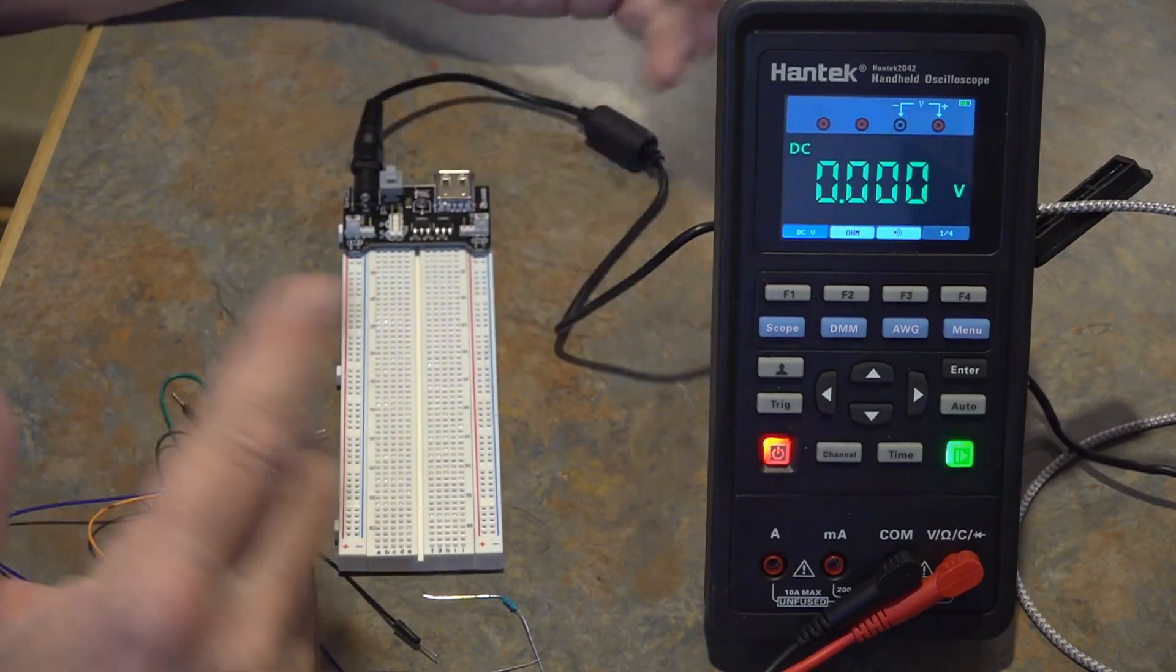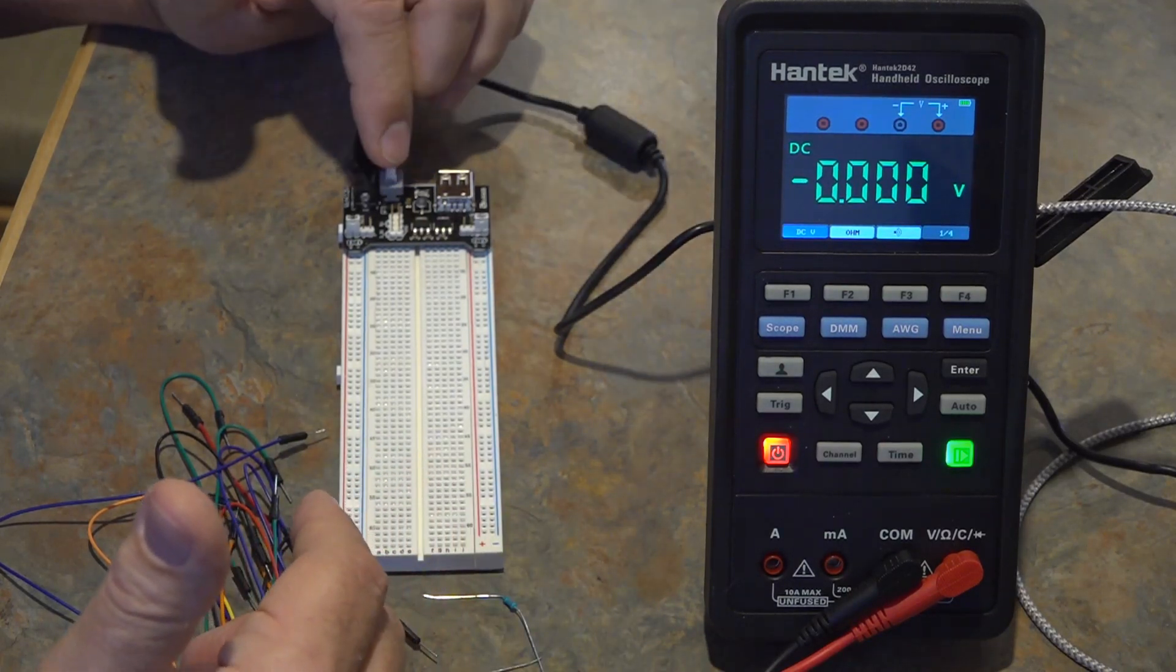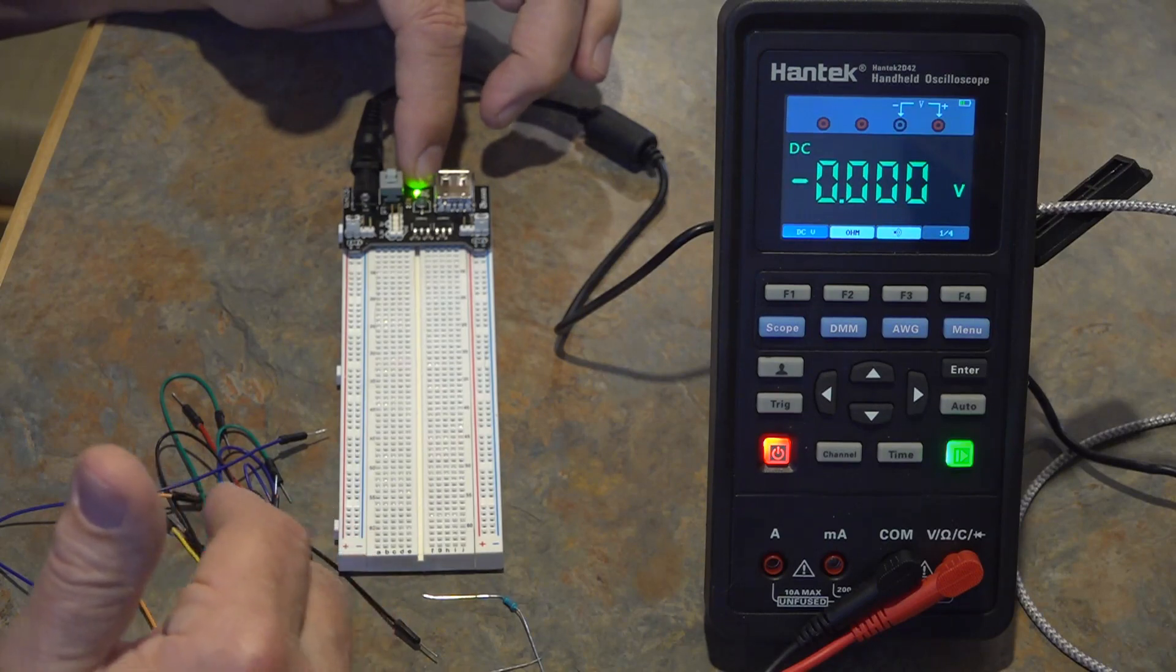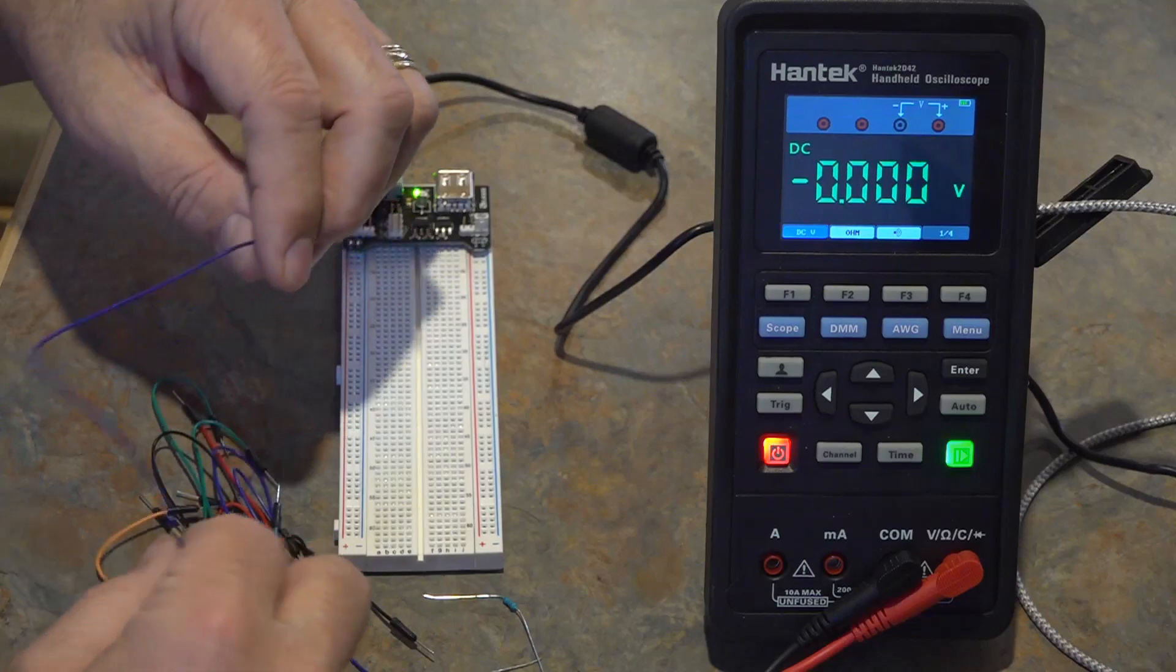The rails are common and the grounds are common so on one side you've got 3.3, on the other side you've got 5 volts and a common ground. The power button turns on and supplies power and you've got the green LED.